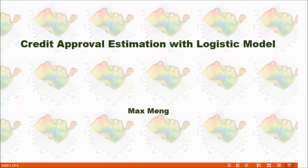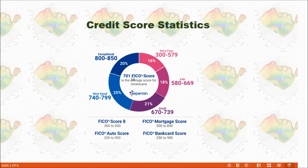In this video, I'm going to talk about how to estimate credit approval with a logistic model. When you apply for a loan — for example, a mortgage or a credit card — a company will use your credit score to evaluate your request. They will either approve or reject your request based on your credit score, mainly.